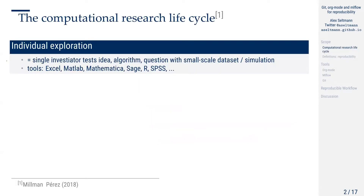First, what are we talking about? There is something called a computational research lifecycle for people who are computing in their research. This usually goes through different stages. The first one would be individual exploration, where we're trying to test an idea, an algorithm, or a question with a small-scale dataset. We usually code a lot of experimental code and see what works and what doesn't. Tools investigators might use are, for example, Excel, MATLAB, Mathematica, SAGE, or for statistics R or SPSS.